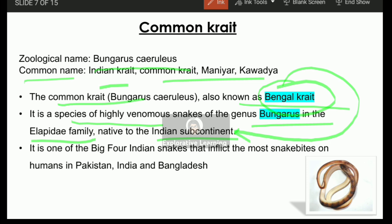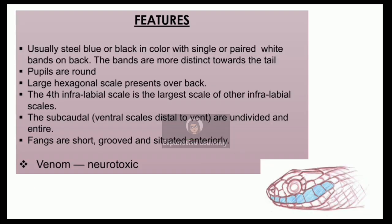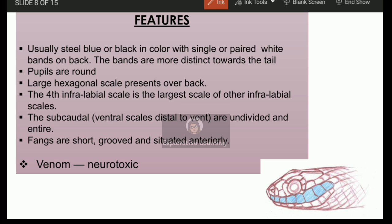The link between its name 'Bengal krait' and the Indian subcontinent is that Bengal is a state in India, and due to the abundance of the snake in West Bengal it derived its name. It is one of the big four Indian snakes that inflict the most casualties — one of the most commonly known snakes responsible for causing death due to snake bite. It is not only found in the Indian subcontinent but also in Pakistan and Bangladesh, which is why it is reported to be one of the most venomous snakes causing human fatalities from snake bite.